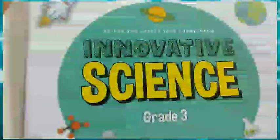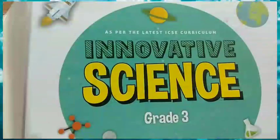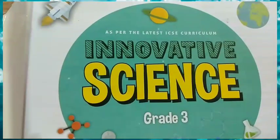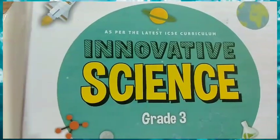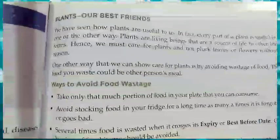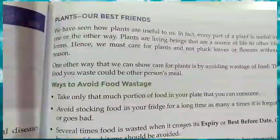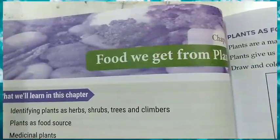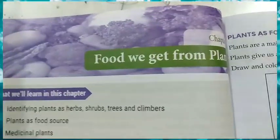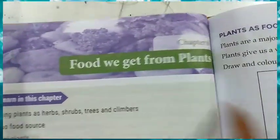Good morning to my dear students of class 3. Today in innovative science we are going to complete the chapter which we started earlier. Chapter number 6 — the name of the chapter is 'Food We Get from Plants.'